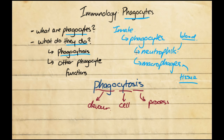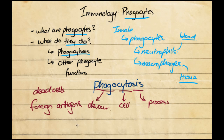These phagocytes devour other things — they devour dead cells and they devour foreign antigens. These antigens, as previously mentioned, can be cells, foreign particles, or any molecules which are not part of the body. When phagocytes undergo phagocytosis, they literally engulf the foreign particle — they ingest and swallow them.